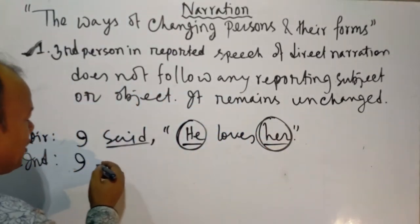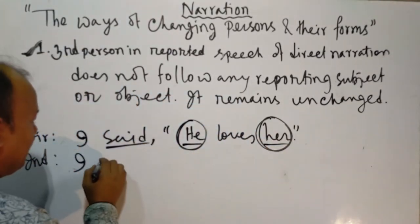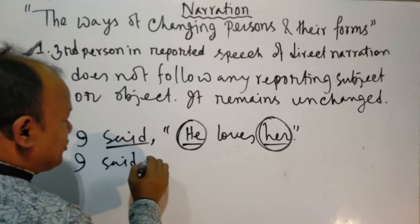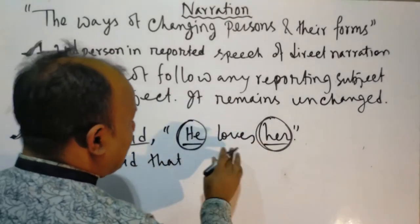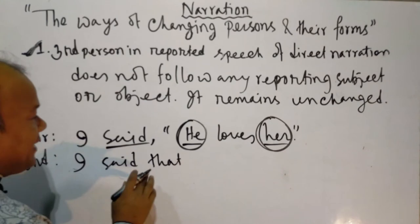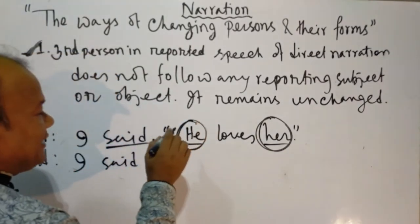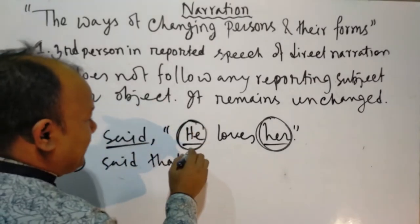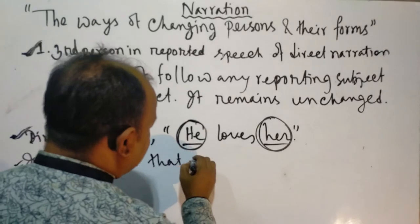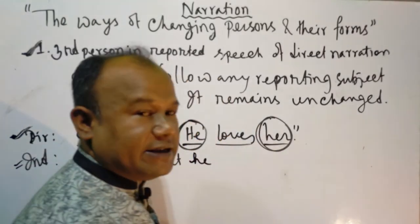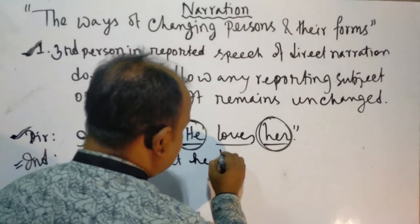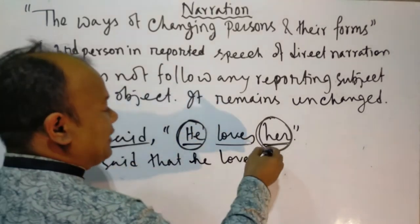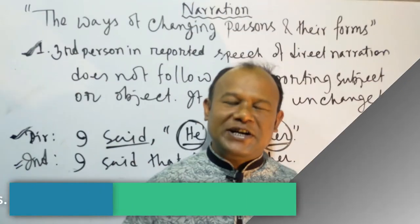Number one: third person in reported speech of direct narration doesn't follow any reporting subject or object — it remains unchanged. In the example 'I said, he loves her,' both 'he' and 'her' are third person. So the indirect form is: 'I said that he loved her.' The third person pronouns remain unchanged; only the tense shifts from simple present to simple past.